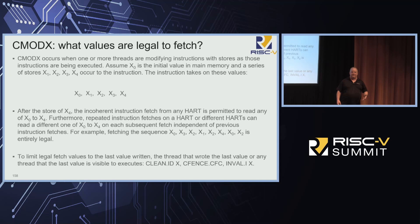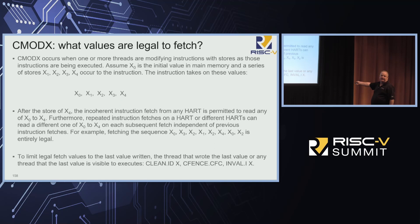If you're just modifying the instruction over and over without committing, fetches are allowed to get all sorts of stale images and weird patterns. But eventually this has to come to an end — we want people to start executing x4 and stick to x4. The way we do that: execute a clean which pushes x4 down to memory, do the fence, then do the invalidate. Once you do this sequence, whatever the coherent last value in memory is, is what you will execute from that point forward.